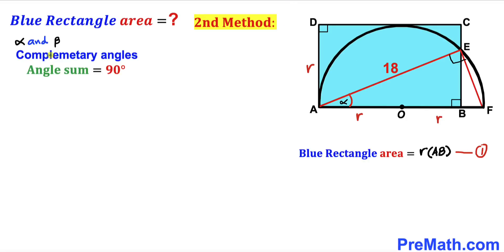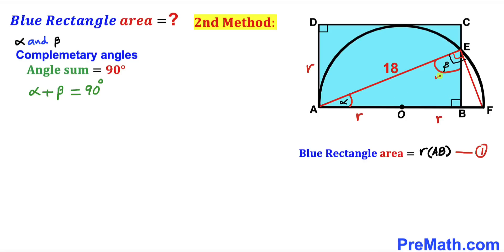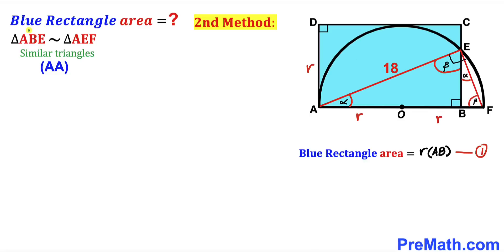Now for the second method. Let alpha and beta be two complementary angles, so alpha plus beta equals 90 degrees. In right triangle ABE, angle BAE is alpha and the right angle is 90 degrees, so the remaining angle is beta. In triangle FBE, one angle is alpha and another is 90 degrees, so the third is beta. Therefore right triangles ABE and AEF are similar triangles by the angle-angle similarity theorem.